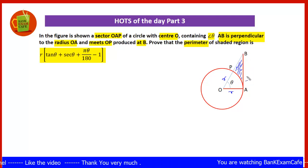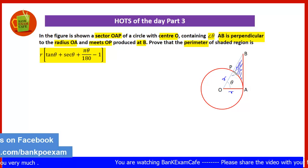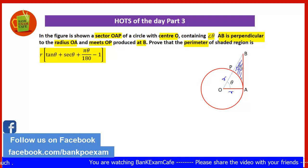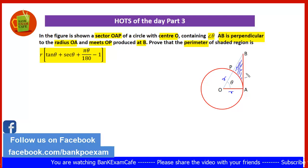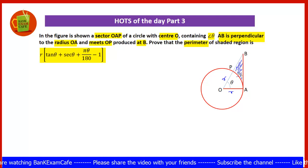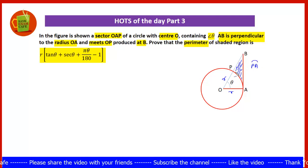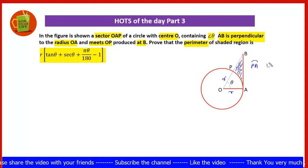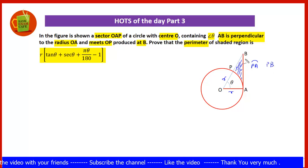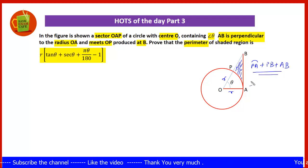Perimeter means the total length of the outer boundary. The boundary of the shaded region consists of PB, BA, and arc AP. This total is the perimeter. So to find the perimeter we will find the length of arc PA, then the length of PB, and then the length of AB.